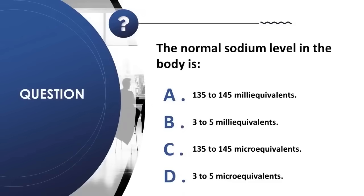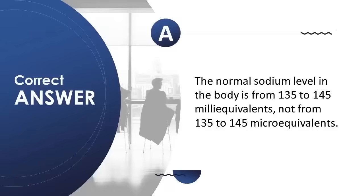Question 13: The normal sodium level in the body is: A) 135 to 145 milliequivalents, B) 3 to 5 milliequivalents, C) 135 to 145 microequivalents, D) 3 to 5 microequivalents. Correct answer is A. The normal sodium level is 135 to 145 milliequivalents, not microequivalents.